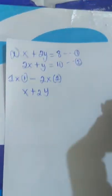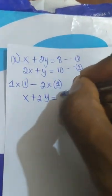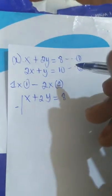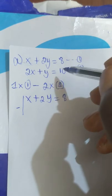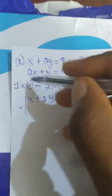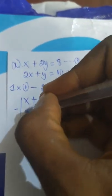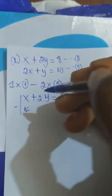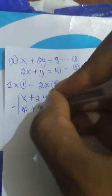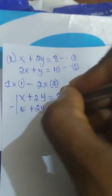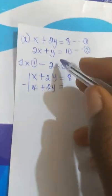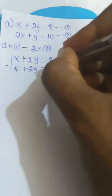From there we have x plus 2y equal to 8, minus two times 2x plus 2y, which gives 4x plus 2y equal to 2 times 10, which is 20.